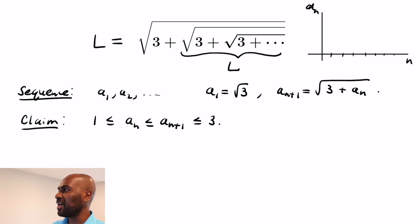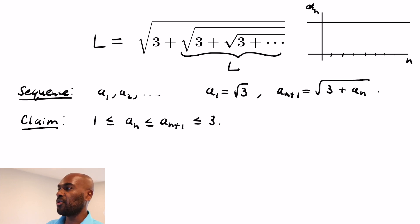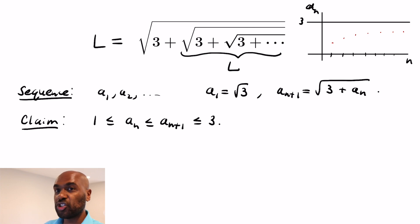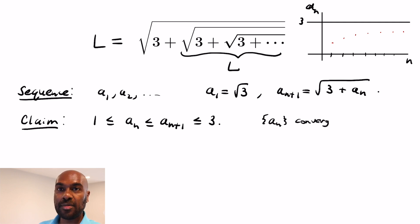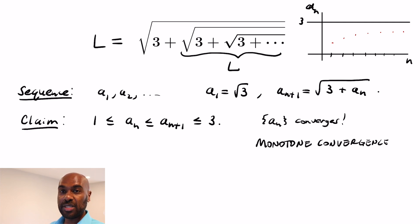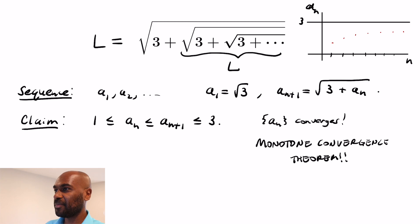So inductively, the sequence is weakly increasing and bounded above. Graphing the sequence for various values of n confirms it is bounded above by 3 and increasing. As a consequence, it may not converge to 3 itself, but it definitely converges. This follows from a theorem called the monotone convergence theorem, which states that a weakly increasing sequence bounded above must converge to something.